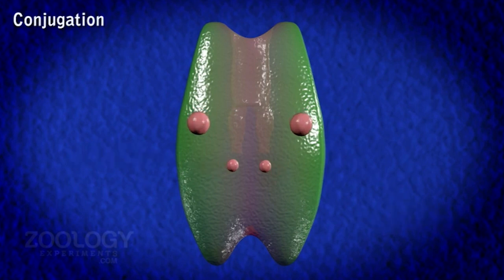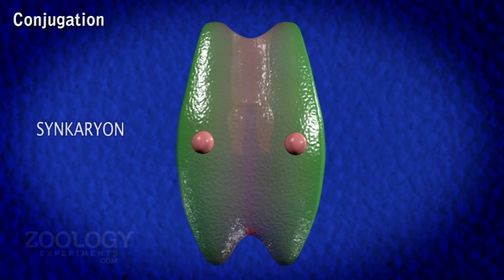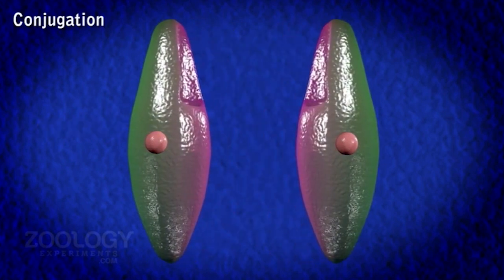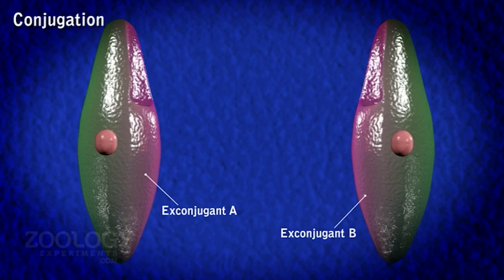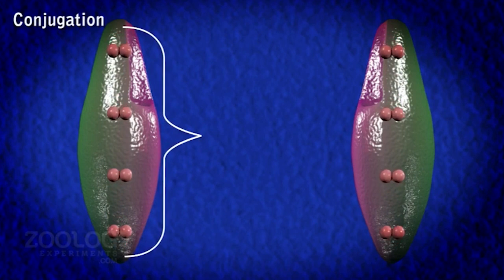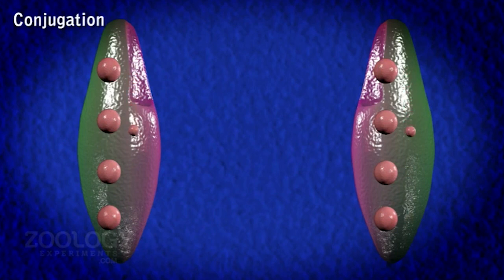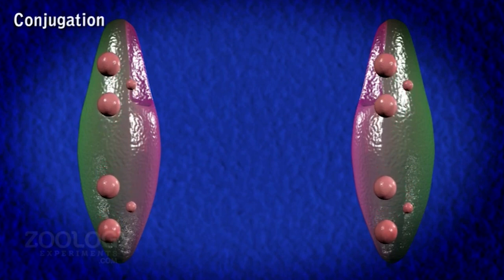The migratory gamete nucleus of one cell passes through the protoplasmic bridge into another cell. Within each cell, the new migratory gamete nucleus fuses with its stationary gamete nucleus. This fusion, also called syngamy, results in the formation of a single diploid zygote nucleus, also known as a synkaryon. The zygote nucleus in each cell divides three times by mitosis to form eight nuclei. Four of these eight nuclei grow in size to become macronuclei. The remaining four small nuclei are called new micronuclei. Out of the four micronuclei, three degenerate and disappear, and the remaining one micronucleus divides twice, producing four daughter paramecia.